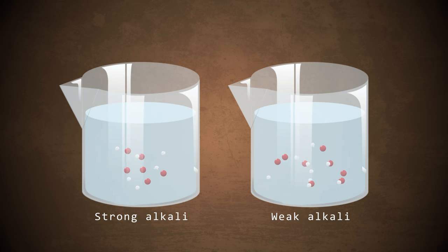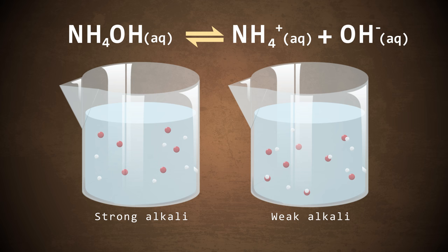In contrast, a weak alkali is one that does not completely dissociate in water. A good example of a weak alkali is ammonium hydroxide. In water, it does not completely dissociate into its respective ions.